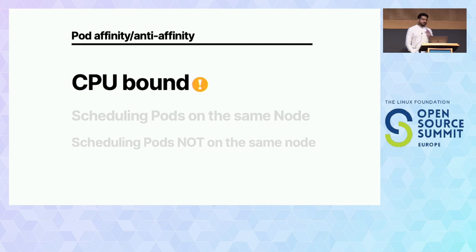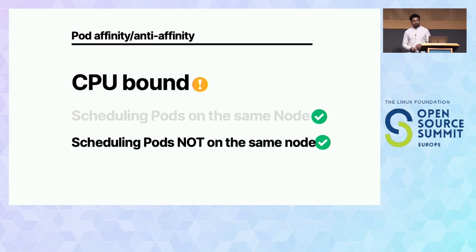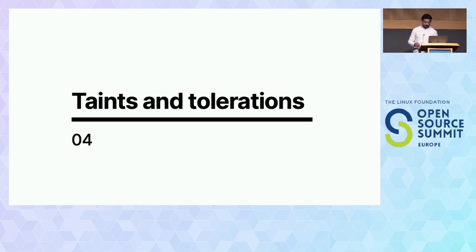A couple of things to be careful about: pod affinity and anti-affinity can take time to calculate. Imagine you have thousands of pods — you have to run calculations to figure out which pods have which labels and where things go. It's quite useful if you want to schedule pods together to minimize latency, or if you don't want pods on the same node. Ingress is a good example — you don't want two ingress pods ending up on the same node, so you can give ingress an anti-affinity to itself, so it repels itself.